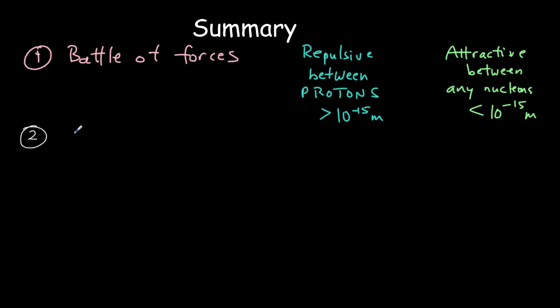Secondly, we saw that this ratio of the number of neutrons to the number of protons increased with atomic number. So you required more and more neutrons to hold the nucleus together.